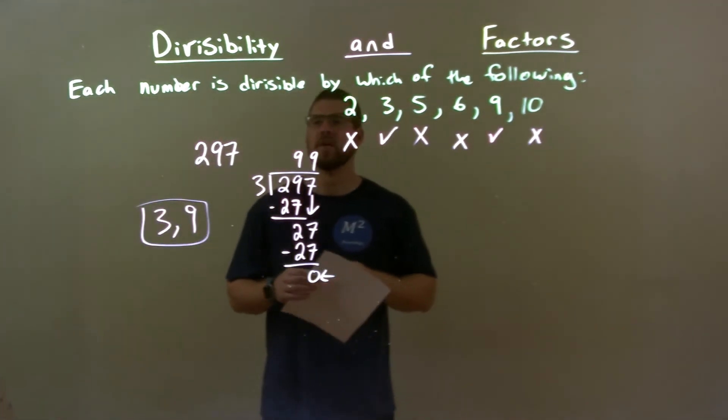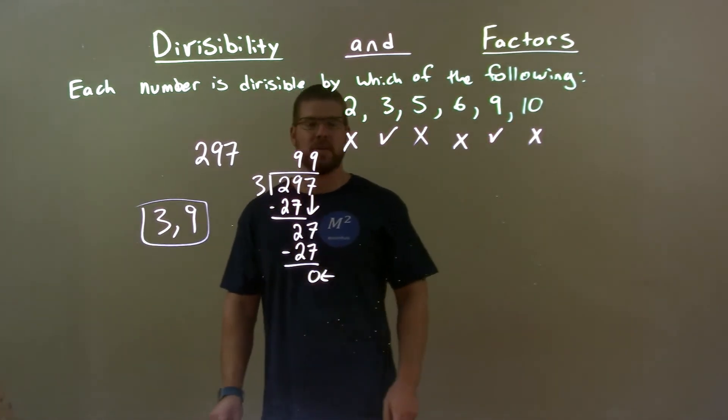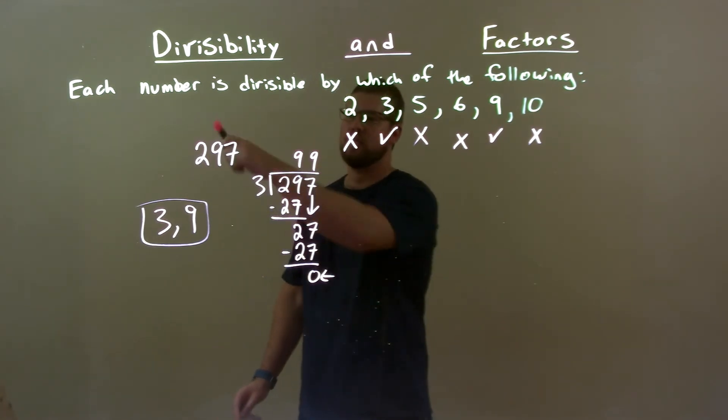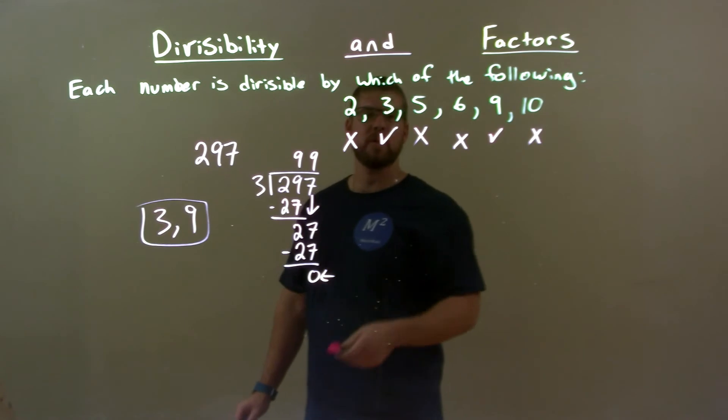Quick recap. We're given 297 and we see which of the following go into it evenly. All the even numbers are out because 297 is odd. Did long division, 3 gave us a remainder of 0, so 3 works.